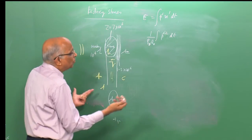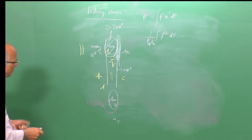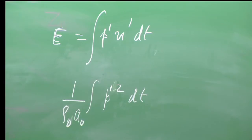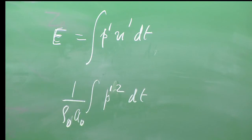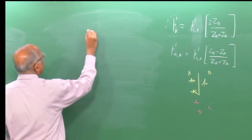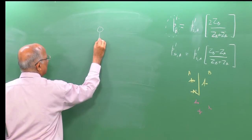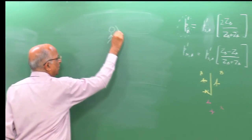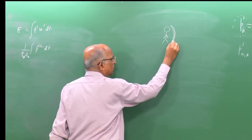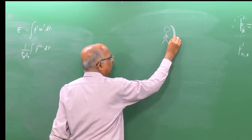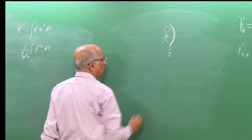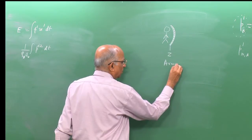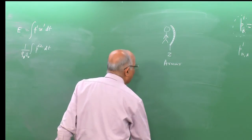We can use rarefaction to our advantage in certain applications. Suppose we use some material to shield a person — say iron or tungsten, a heavy medium with high impedance — something like armor.